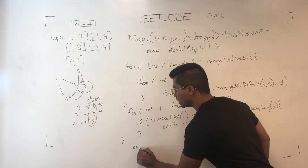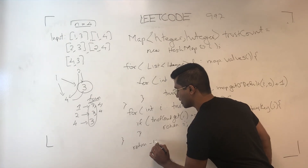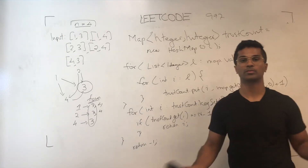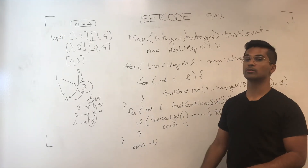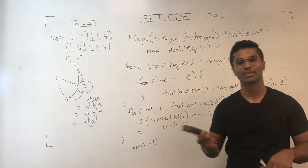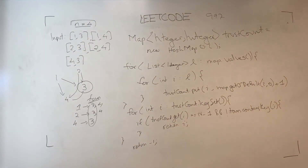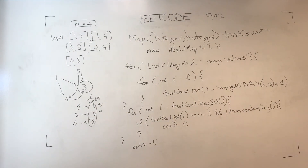Otherwise we return negative one if there's no possible solution, and that's how you solve LeetCode 997. It's a nice problem!